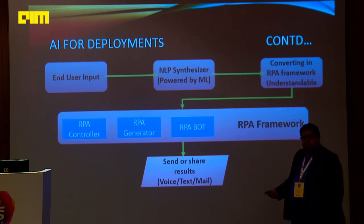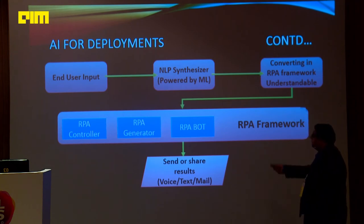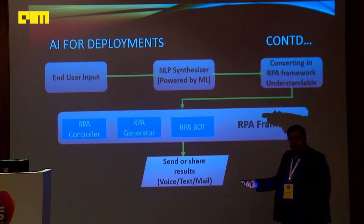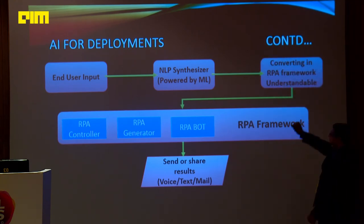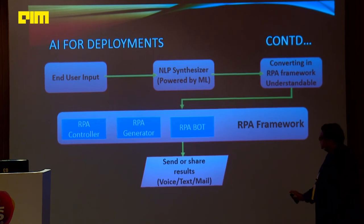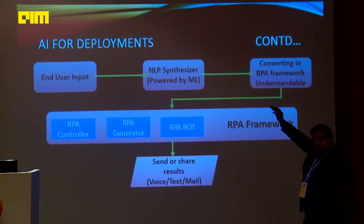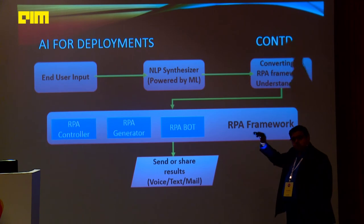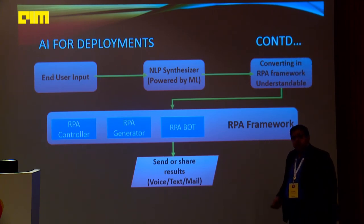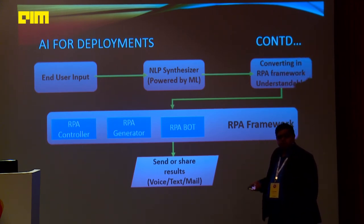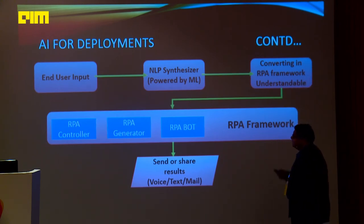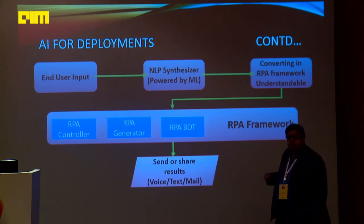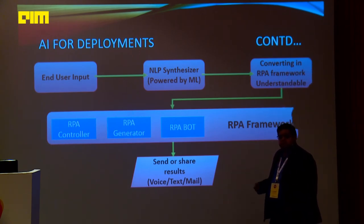If the user wants a voice output only, then it will go as a voice output — for example, some number. If they want a mail, the user will get a mail based on what they specified at input time. This is how the whole process works, and the NLP synthesizer takes care of doing all those things that currently people are doing manually. With the power of ML, the complete system will keep on getting trained, keep learning, and do things automatically going forward.